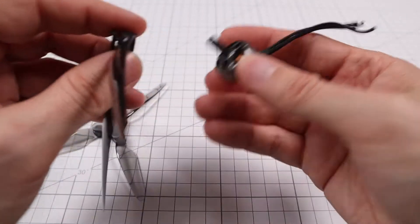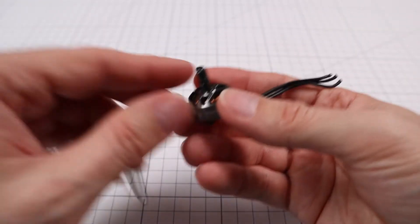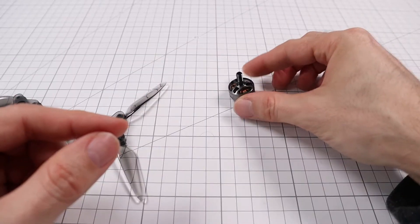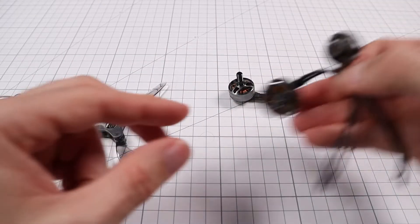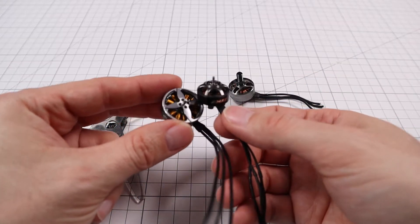The problem though is that this mount here is not used on all motors. Motors have different kinds of mounts, and the most popular mounts are one, this 5 millimeter mount, and the other one are the T-mount motors, and that's a bit different.